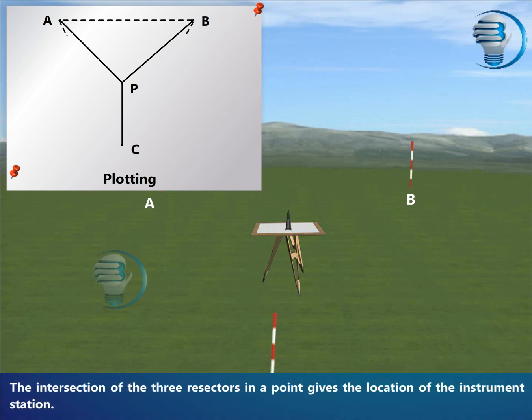The intersection of the 3 resectors in a point gives the location of the instrument station.